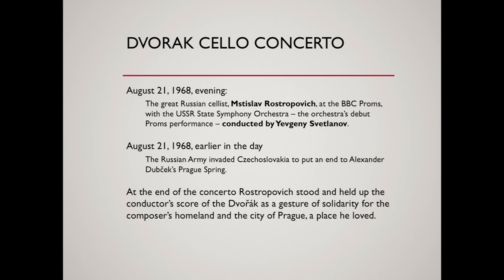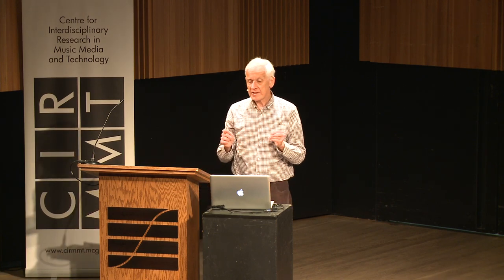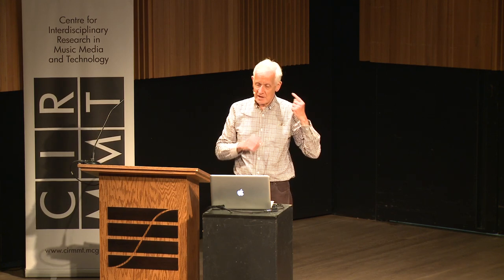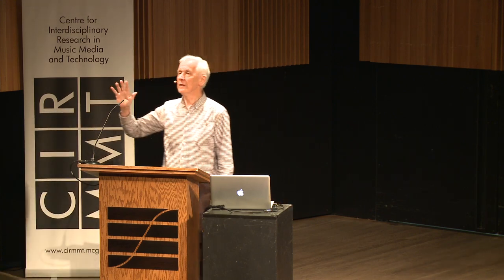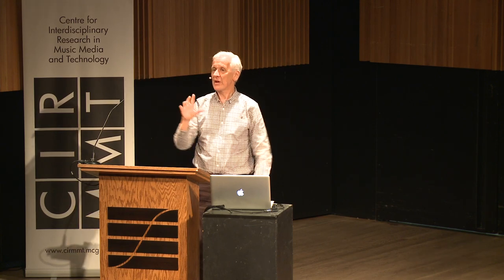Does anybody know what I'm talking about? It's August the 21st, 1968. That evening: Rostropovich at the BBC Proms with the USSR State Symphony Orchestra, conducted by Evgeny Svetlanov. Earlier in the day, the Russian army had invaded Czechoslovakia to put an end to Dubček's Prague Spring. At the end of the concerto, Rostropovich stood and held up the conductor's score as a gesture of solidarity for the composer's homeland and the city of Prague — a place he loved. And that recording captures that. At the very beginning, the audience clap when the artists come onto the stage, and a group of protesters shout 'freedom for Czechoslovakia,' and the rest of the audience shut them up, because they know something about Rostropovich.